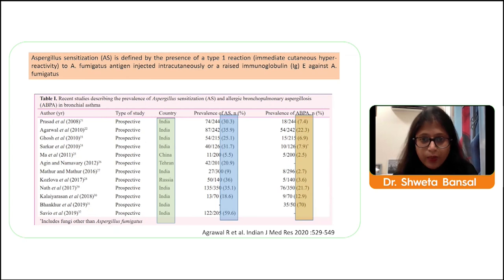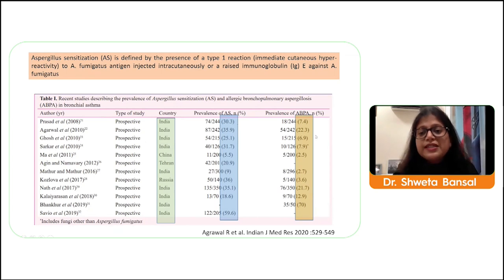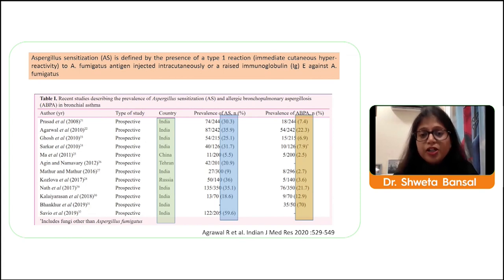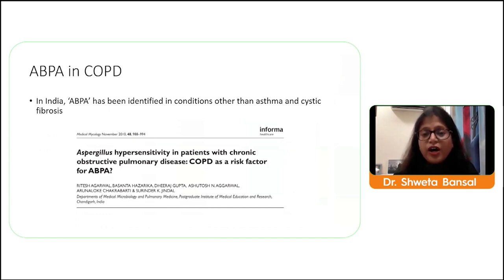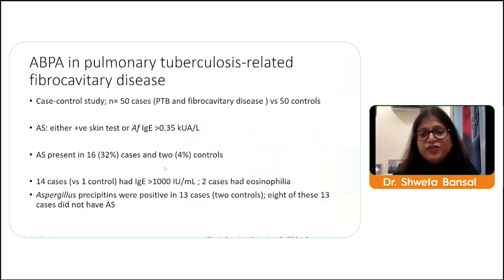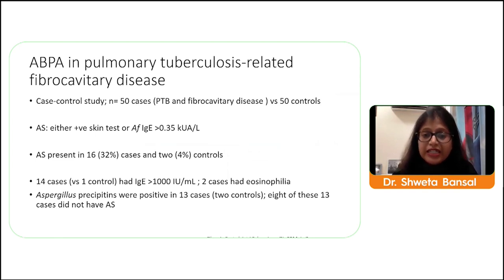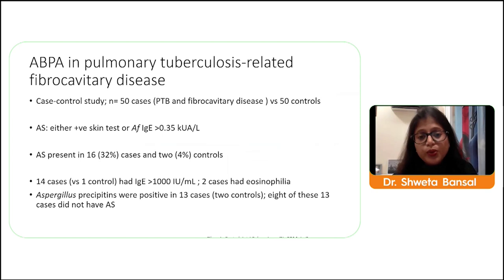Aspergillus sensitization — the presence of type 1 hypersensitivity with positive skin prick test or positive specific IgE against aspergillus — is as high as 30 to 40 percent. Recognition and management of both entities is important. Predisposing conditions include asthma and cystic fibrosis, but in recent years COPD and post-tubercular fibrocavitary disease have also been included in the latest ISHAM criteria as predisposing factors, supported by case reports and series.